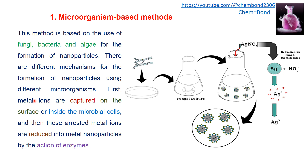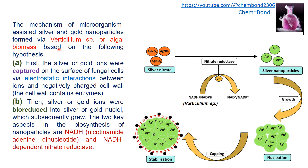The metal ions captured on the surface or inside of the microbial cell are reduced into metal nanoparticles by the action of enzymes. The mechanism for silver or gold nanoparticle formation via Verticillium species or algal biomass involves bioreduction of silver ions from silver nitrate to silver nanoparticles or silver zero state.